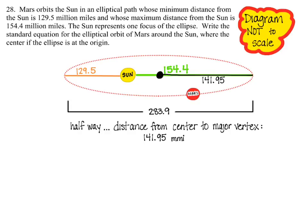Now that I know that the distance from this center to this major vertex is also 141.95 million miles, I can therefore come up with the distance here from the center to the sun. So we figure those out.